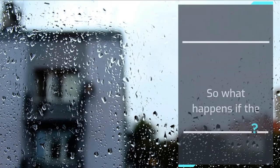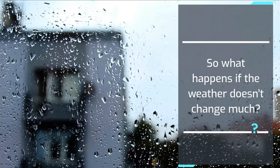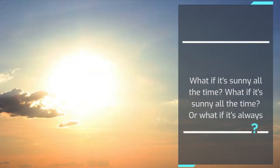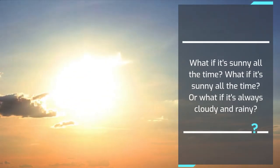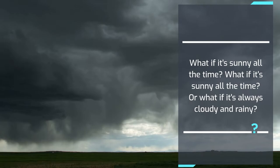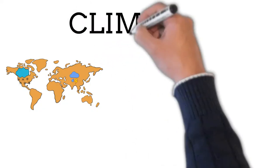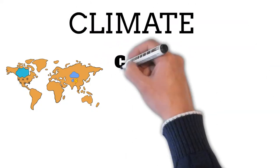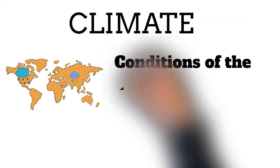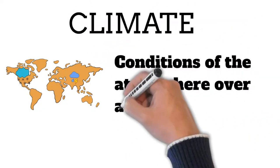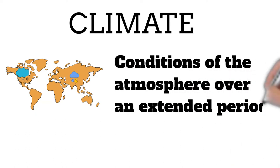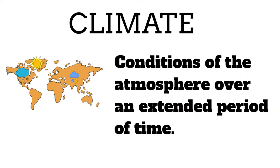So what happens if the weather doesn't change much? What if it's sunny all the time, or what if it's always cloudy and rainy? If the conditions of the atmosphere are generally the same for an extended period of time, we call this climate.